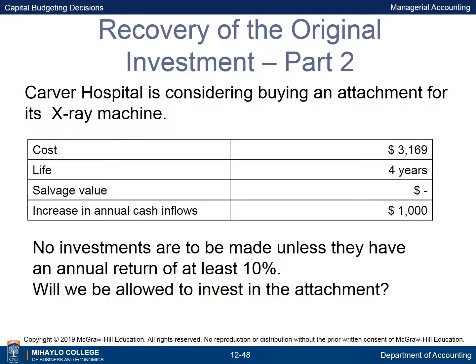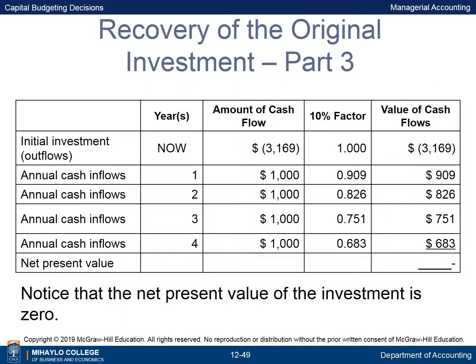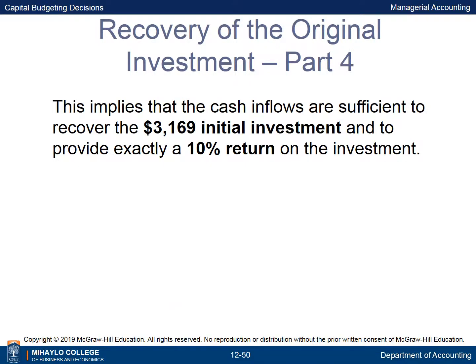Carver Hospital is considering buying an attachment for its X-ray machine. No investments are to be made unless they have an annual return of at least 10%. The net present value of the investment is zero, implying that the cash inflows are sufficient to recover the $3,169 initial investment and provide exactly a 10% return.